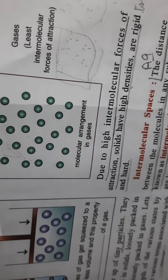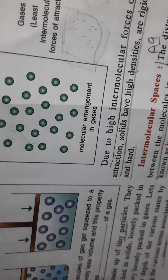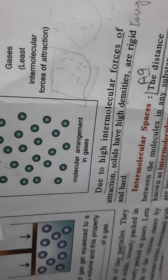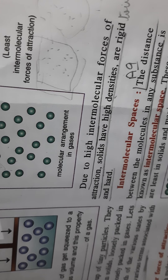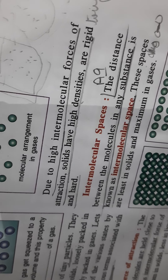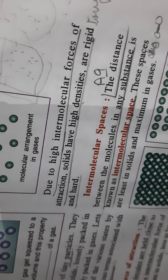Due to high intermolecular forces of attraction, solids have high densities. Density means mass per unit volume — the mass of a given quantity of substance. In solids, a large number of molecules are tightly packed in a small volume, so they have high density; that is why solids are hard and rigid. In liquids, the density is less, and in gases it is almost negligible.